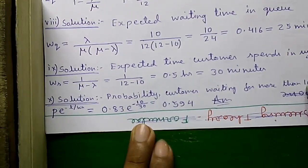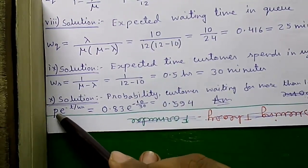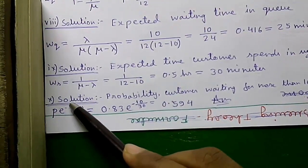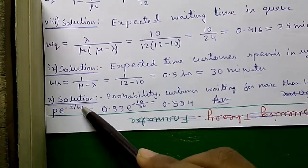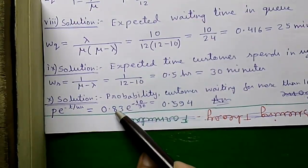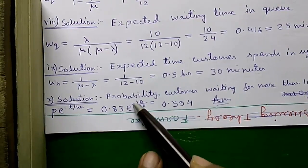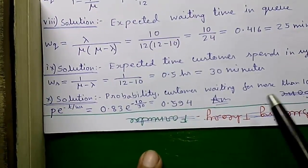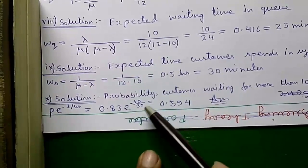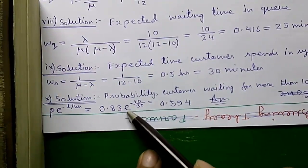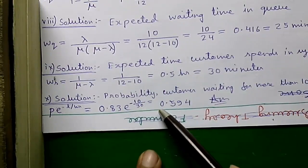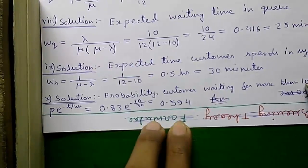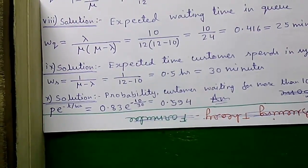Which is given by rho times e to the power minus t by Ws. So our rho or utilization parameter was 0.83 into e to the power t is 10, given in question more than 10 minutes, and Ws we just calculated is 30 minutes. So 0.83 into e to the power minus 10 by 30 equals 0.594 is the probability of a customer waiting for more than 10 minutes. So that's it.